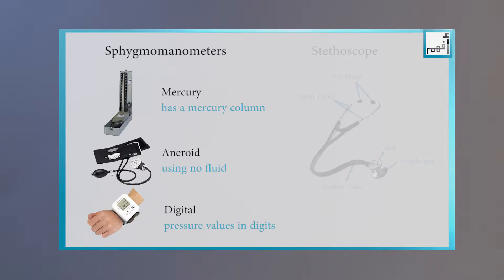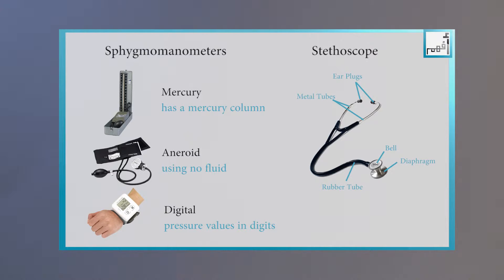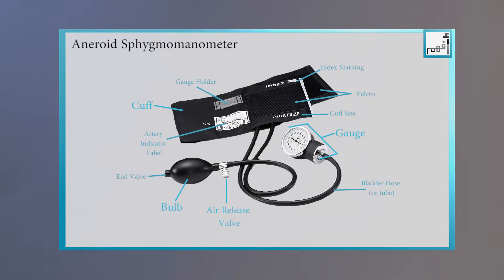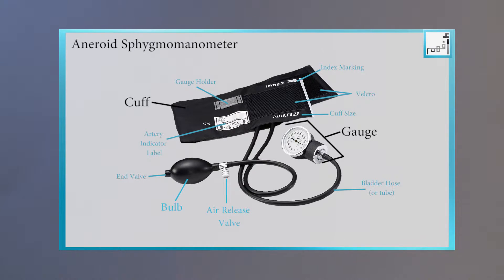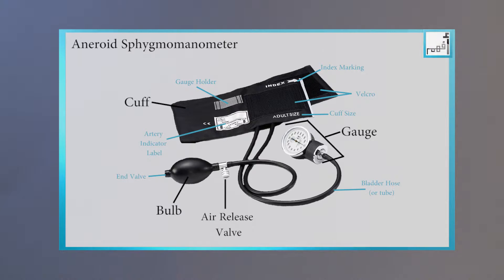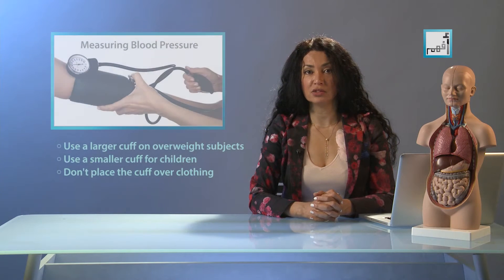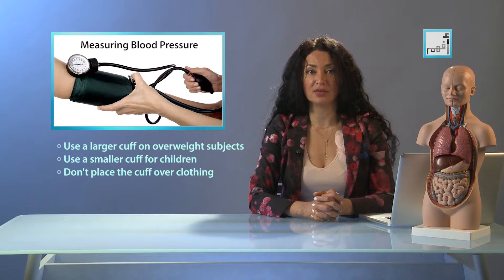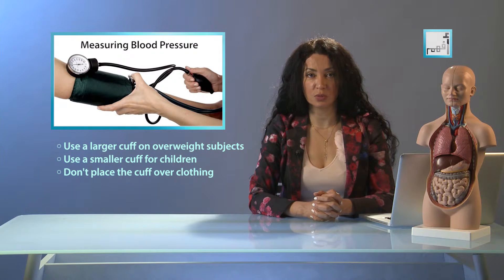A sphygmomanometer and a stethoscope are devices used to record your blood pressure. A sphygmomanometer consists of an inflatable cuff, a measuring unit — the mercury manometer or aneroid gauge — and a mechanism for inflation which may be manually operated, like a manually operated bulb and valve, or a pump operated electrically. The cuff is normally placed to fit around an upper arm at roughly the same vertical height as the heart, while the subject is seated with the arm supported.